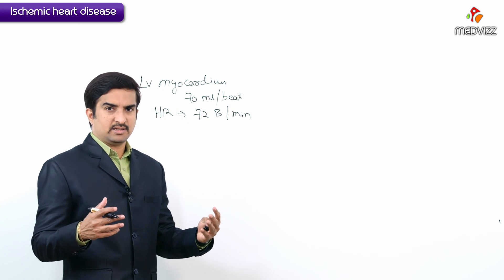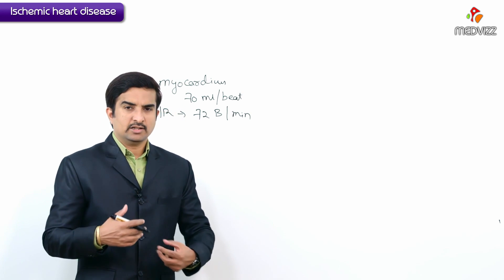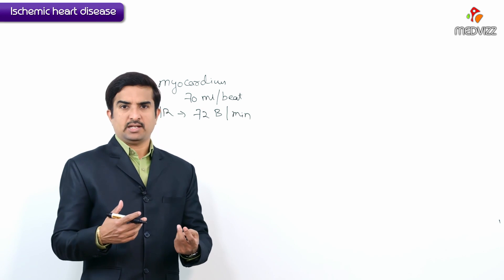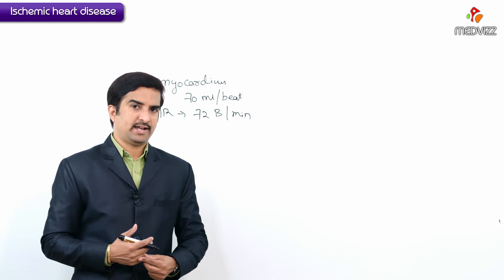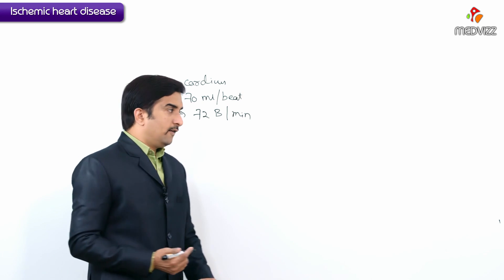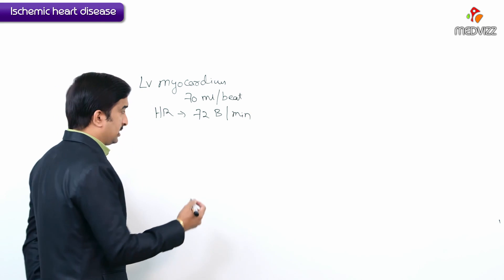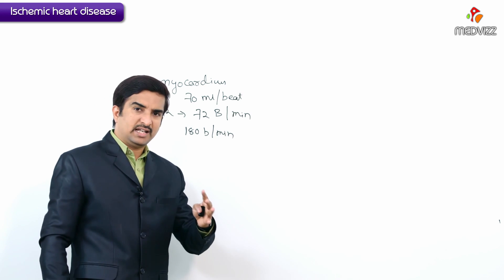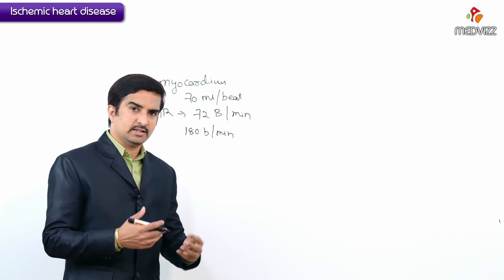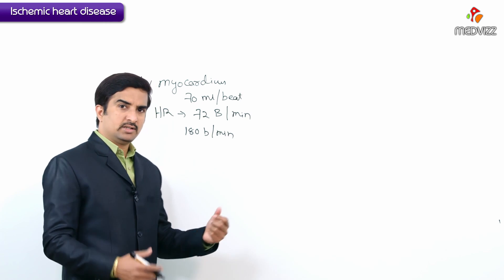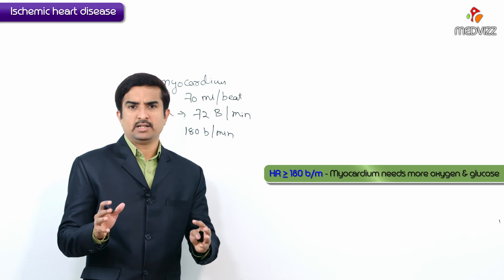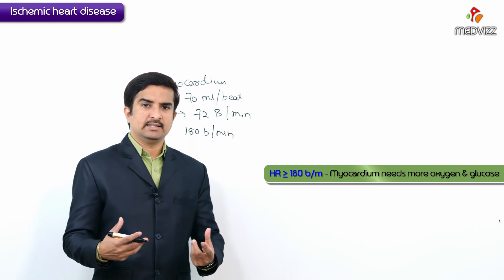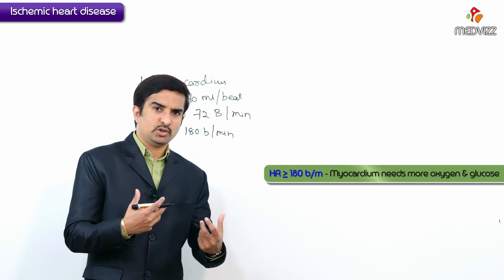In some circumstances, for example when a person is performing strenuous exercise, the force of contraction as well as the heart rate will increase. The heart compensates the increased demand by increasing both force of contraction and heart rate. The compensatory mechanisms can work up to approximately 180 beats per minute, but beyond that the myocardium needs so much oxygen and glucose to sustain the vigorous beating.